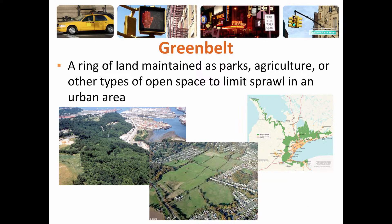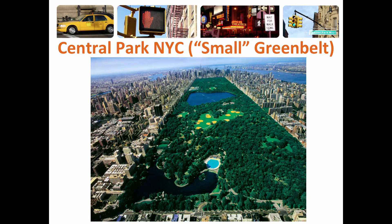Another element of urban planning is a greenbelt — usually an area of parks, agriculture, or open space to limit cities from spreading out and taking over an entire area, and to give people a place to enjoy outdoor activities. One of the most famous areas zoned as a greenbelt is Central Park in New York City. Central Park is actually very large — if you stood in the middle of it, you wouldn't be able to tell you were in New York City. You can see all of the baseball diamonds there to give you an idea of the size of this park.